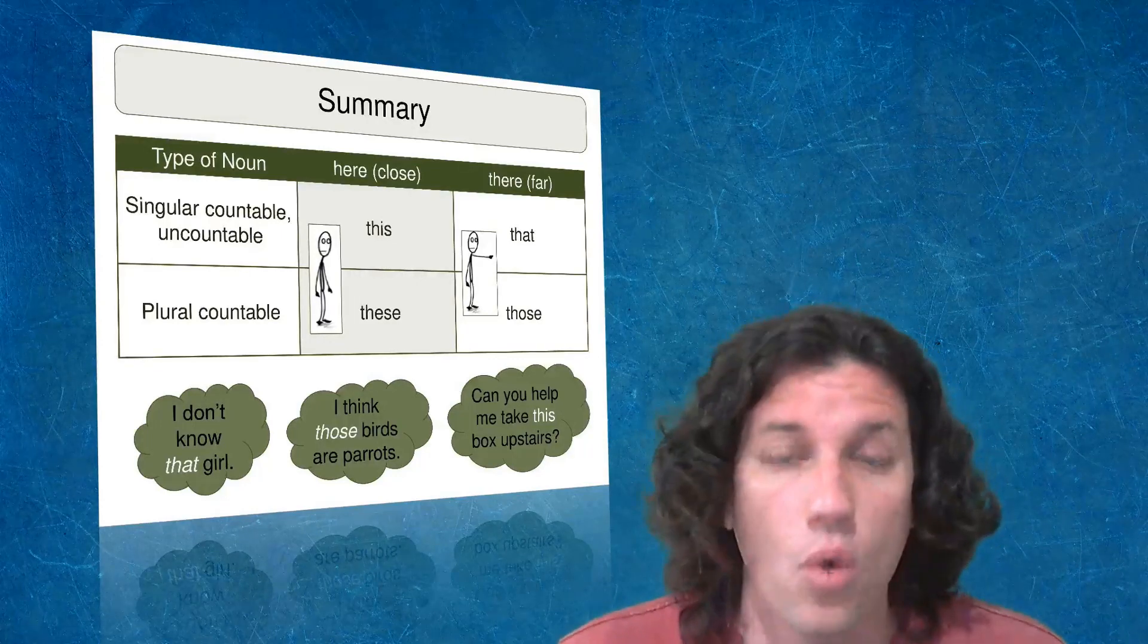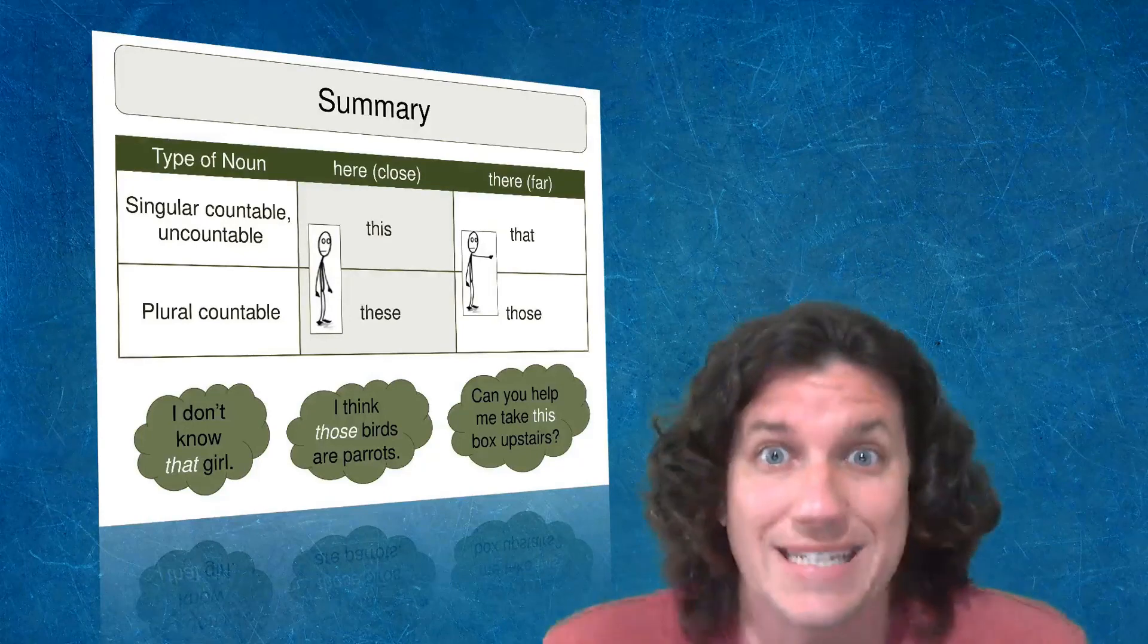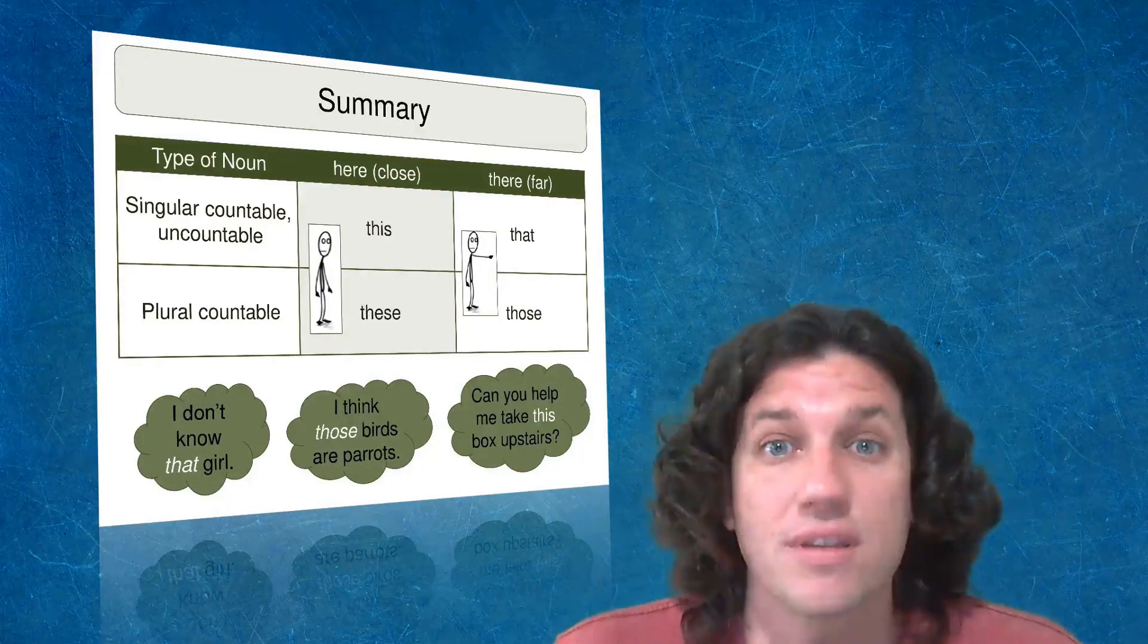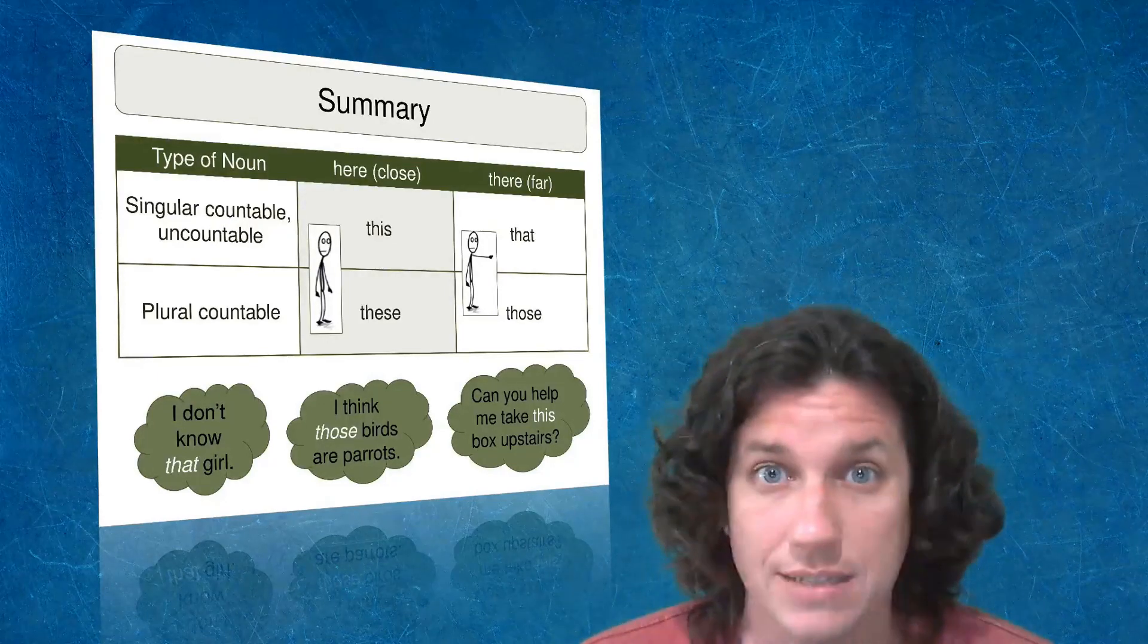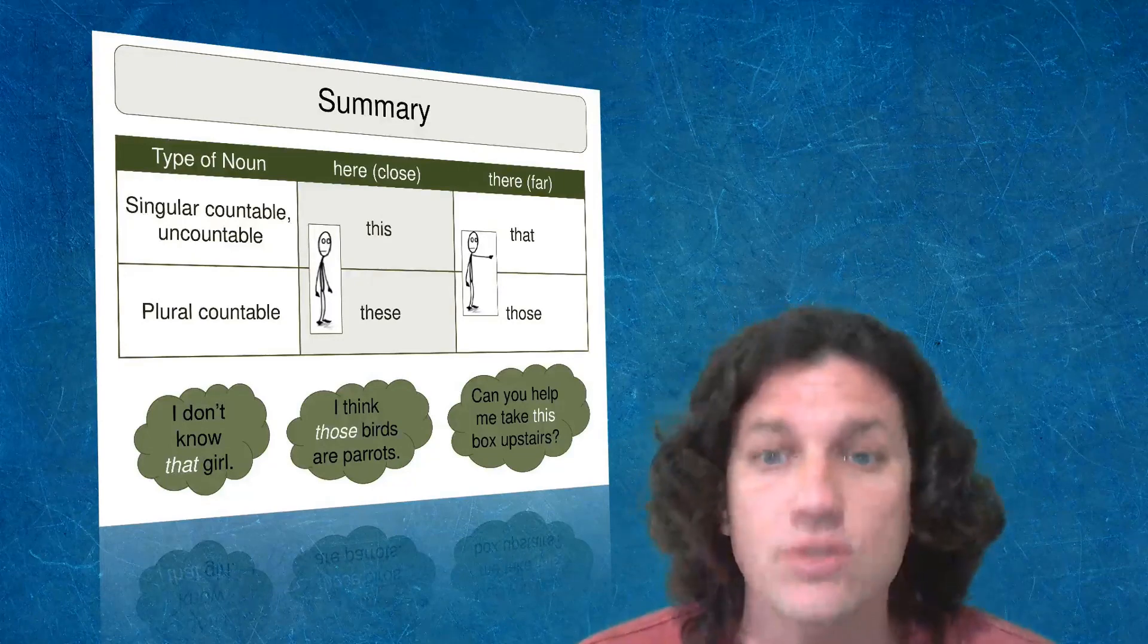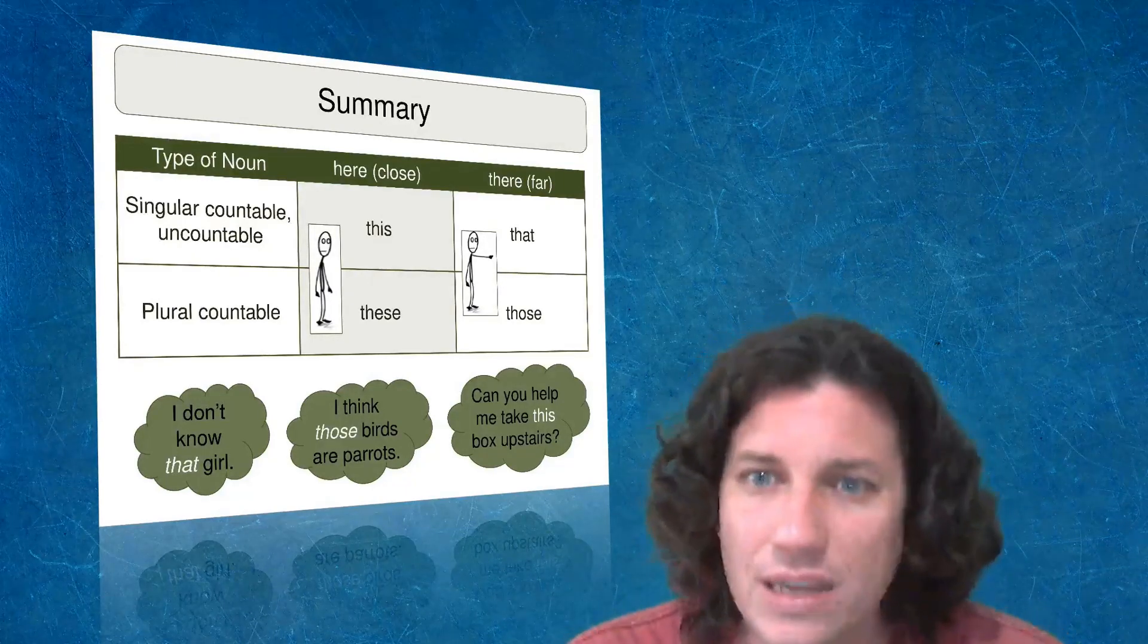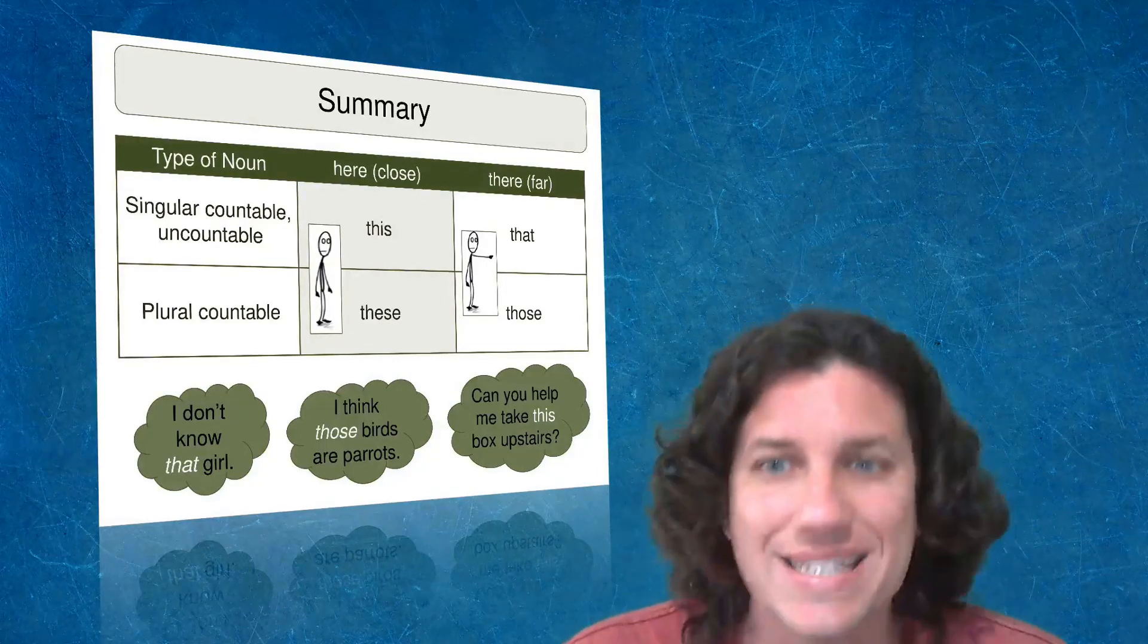But in general, when something is here, it's close, we use this and these. And when something is there, it's far, and we're going to use that and those. And we've got some example sentences here on the slide. You can use this or something similar with your students. So when we're dealing with this, this is the key concept, but it's not enough.